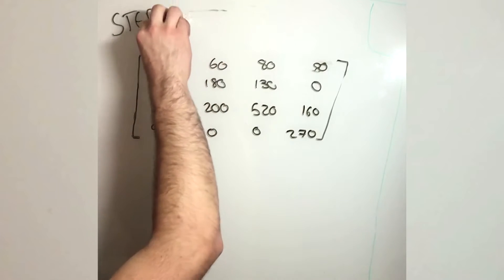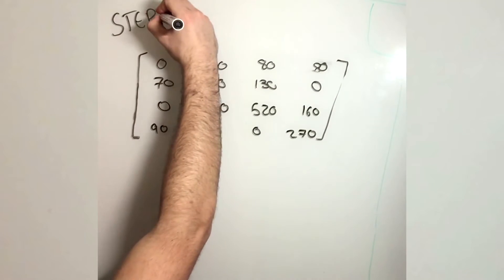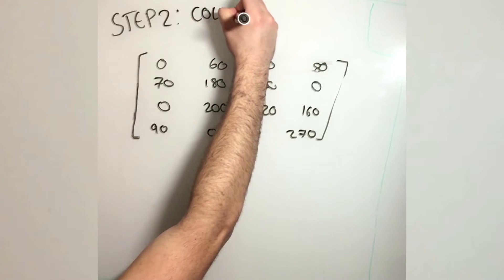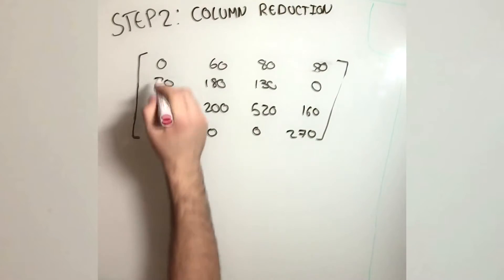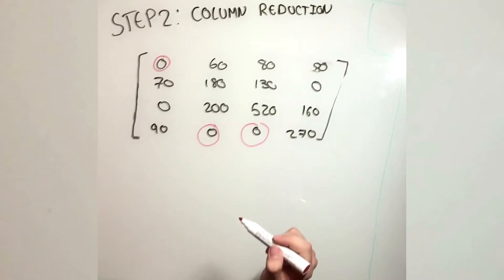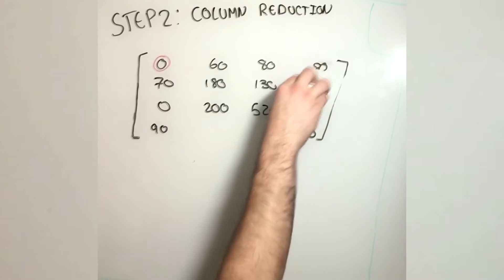Now, with column reduction, we do the similar thing to row reduction. We circle the smallest number in each column and take away that smallest number for the whole column. In our case, the matrix stays the same because the lowest number in each column is 0.